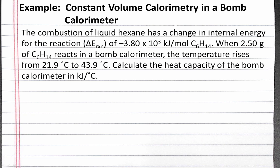In this example problem, we'll examine constant volume calorimetry in a bomb calorimeter. The combustion of liquid hexane has a change in internal energy for the reaction of negative 3.80 times 10 to the third kilojoules per mole of hexane. When 2.5 grams of hexane reacts in a bomb calorimeter, the temperature rises from 21.9 degrees Celsius to 43.9 degrees Celsius. Calculate the heat capacity of the bomb calorimeter in kilojoules per degree Celsius.